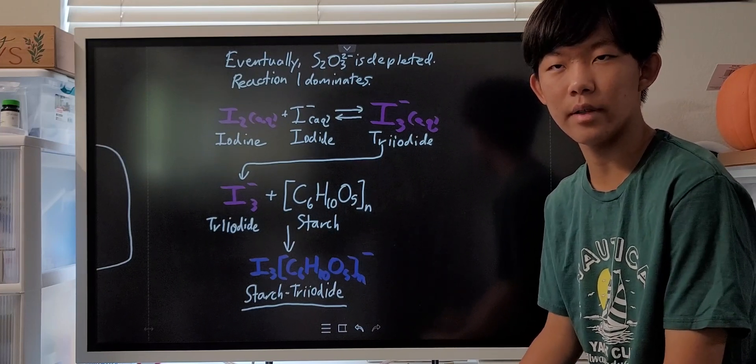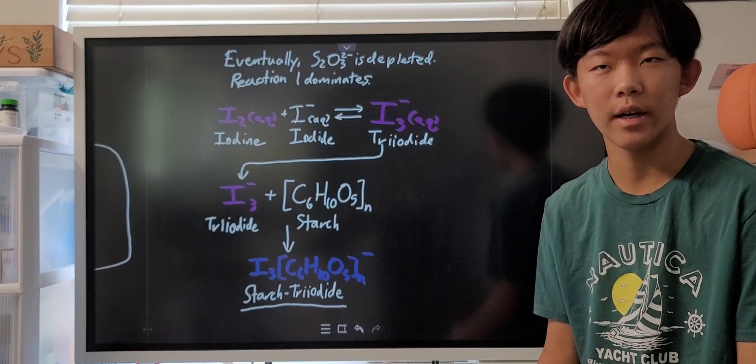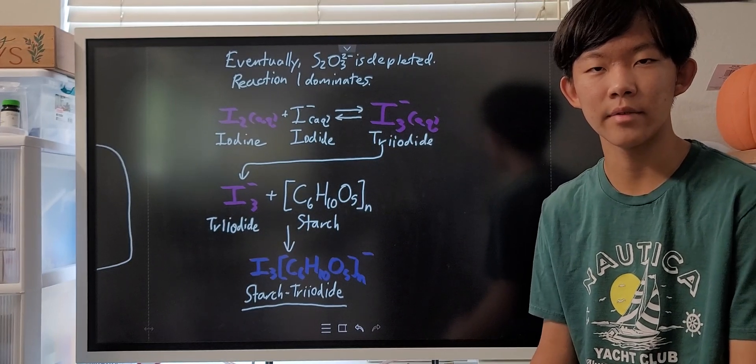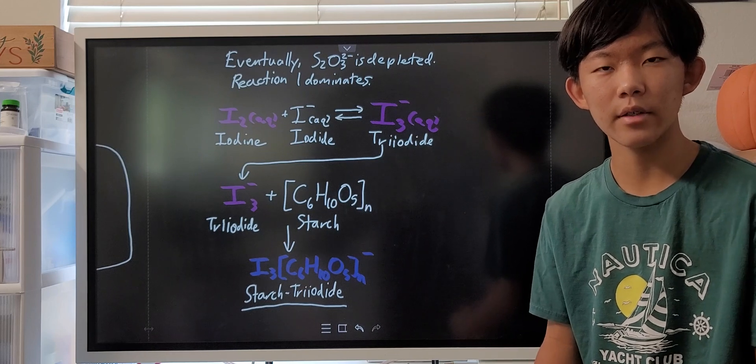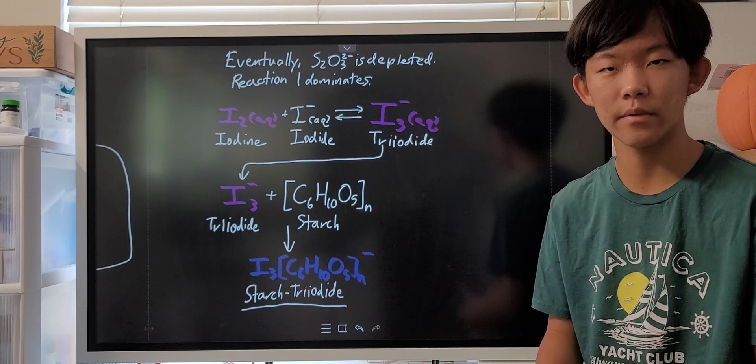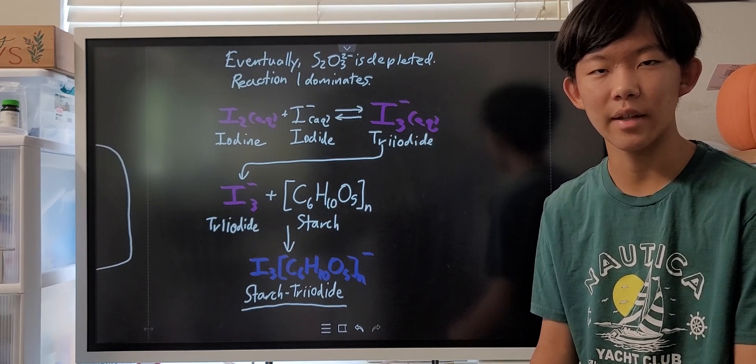So that was what happened during the iodine clock reaction. The reason we call this reaction the iodine clock reaction is because it takes a predictable amount of time for the solution to change color. But you can actually change the time it changes color based on the concentration of the reagents and the temperature, so you can mix it up and have fun with it.